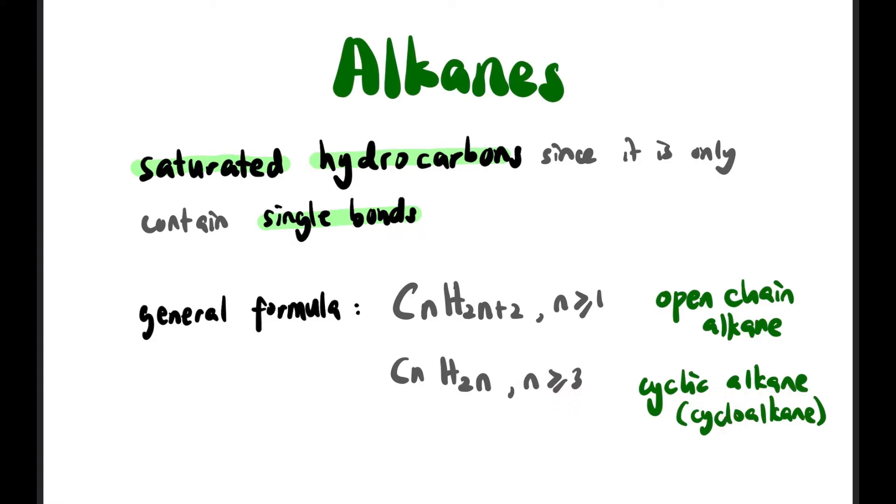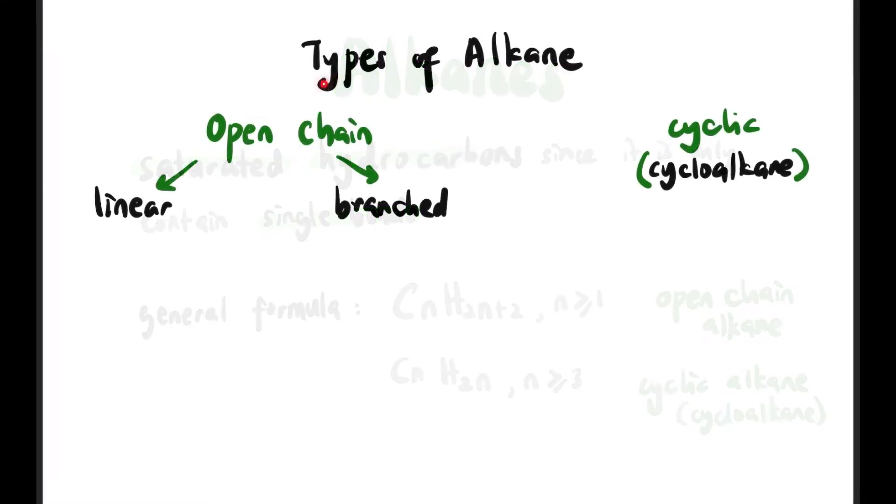At least three carbons for cyclic alkanes or cycloalkanes. Next, let's check types of alkanes. We have two types of alkanes: open chain alkanes and also cyclic alkanes or cycloalkanes. Open chain has two types: either linear or branched.